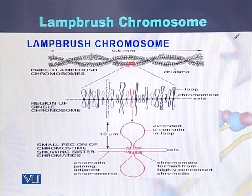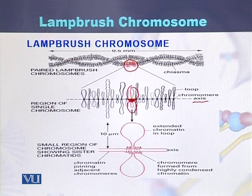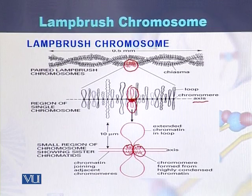Here we can see a diagram of a lamp brush chromosome, with a particular region magnified. There is a central axis of the chromosome and on both sides there are loops attached to the central axial region. The magnified loop shows that where it is attached to the axis, the DNA of the chromatid is highly condensed.